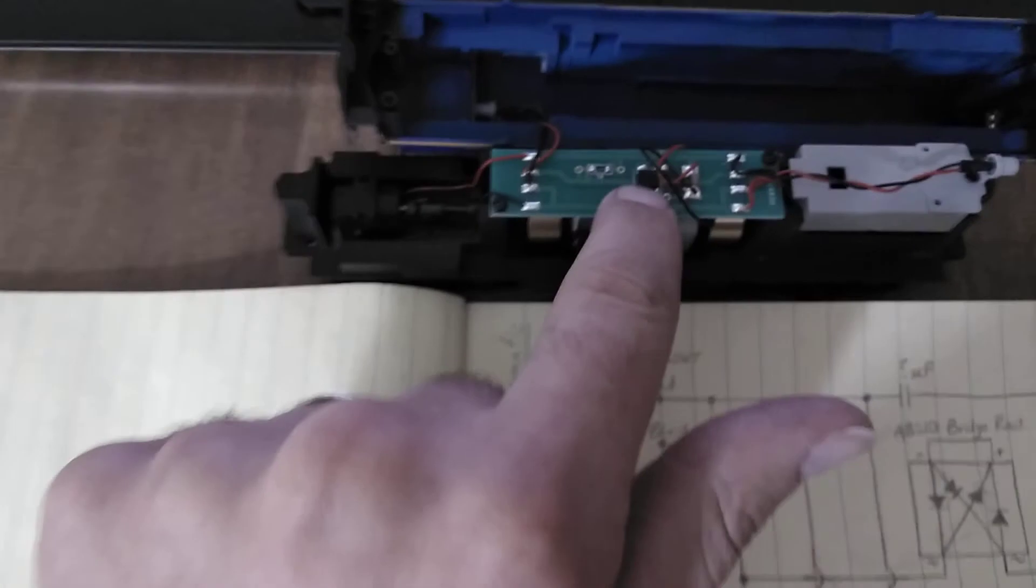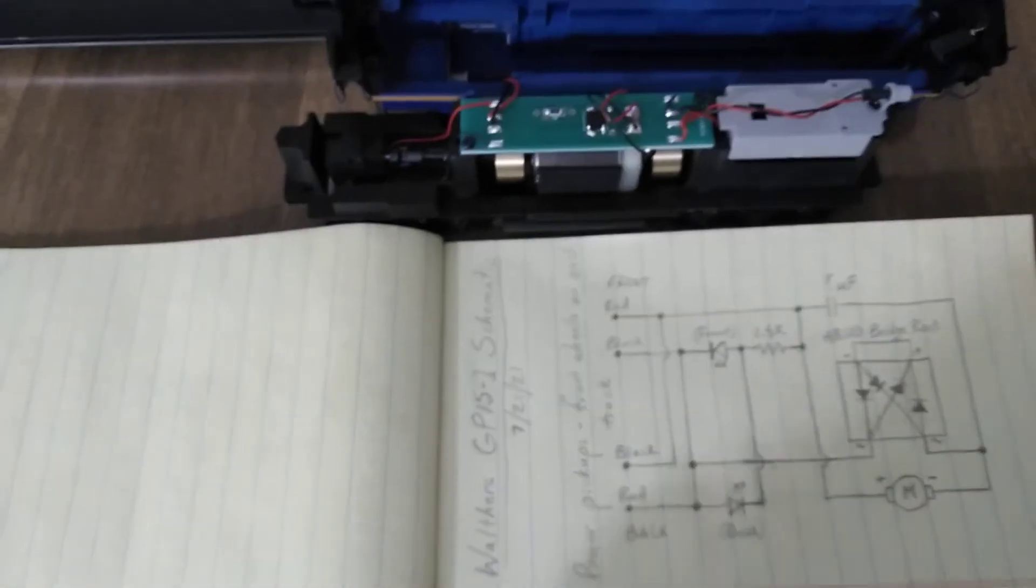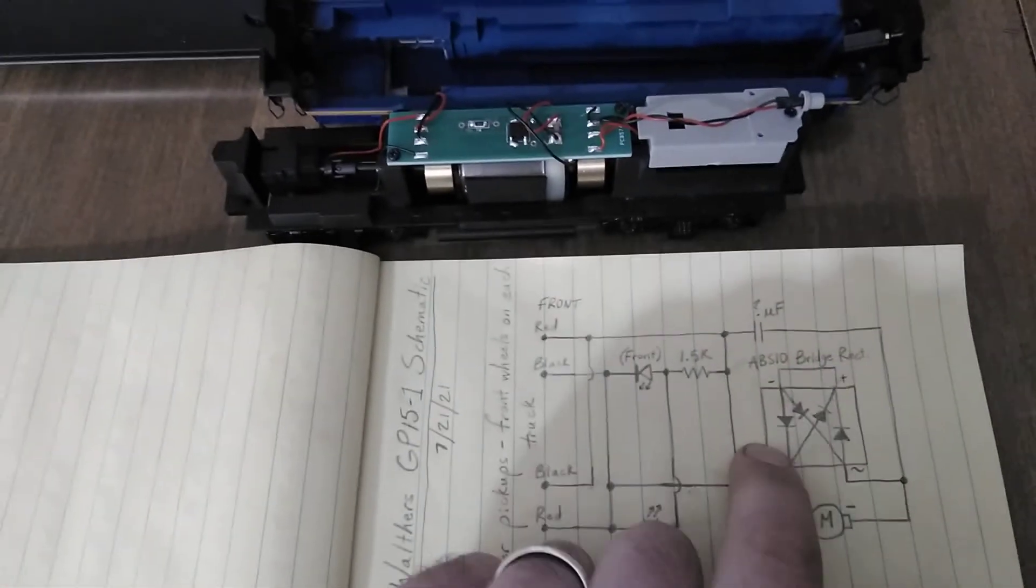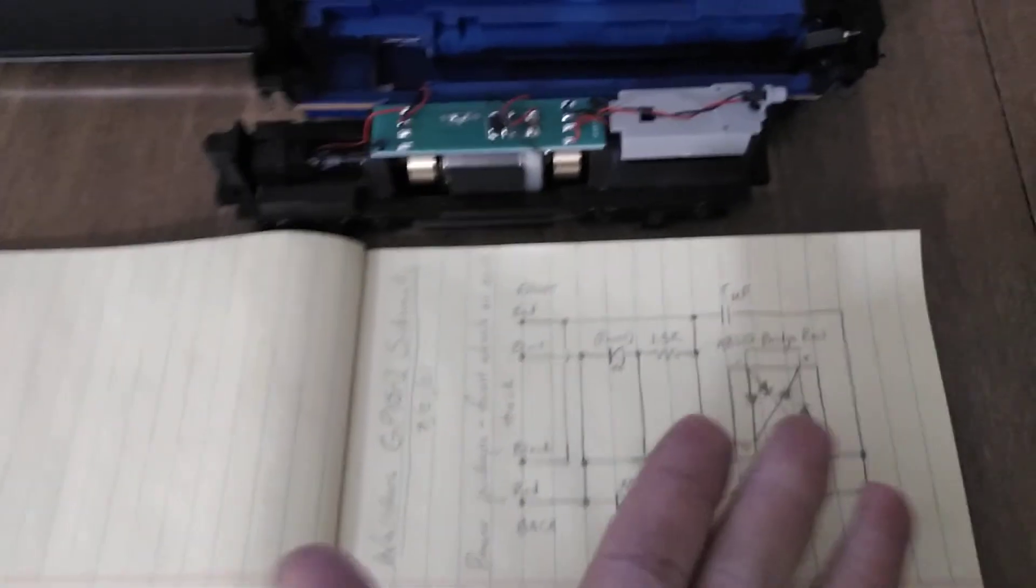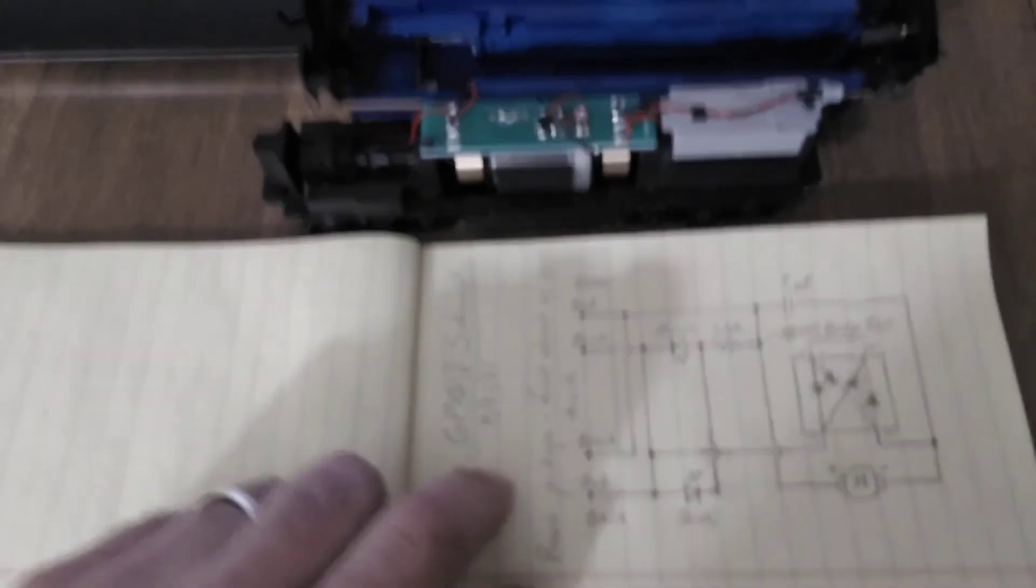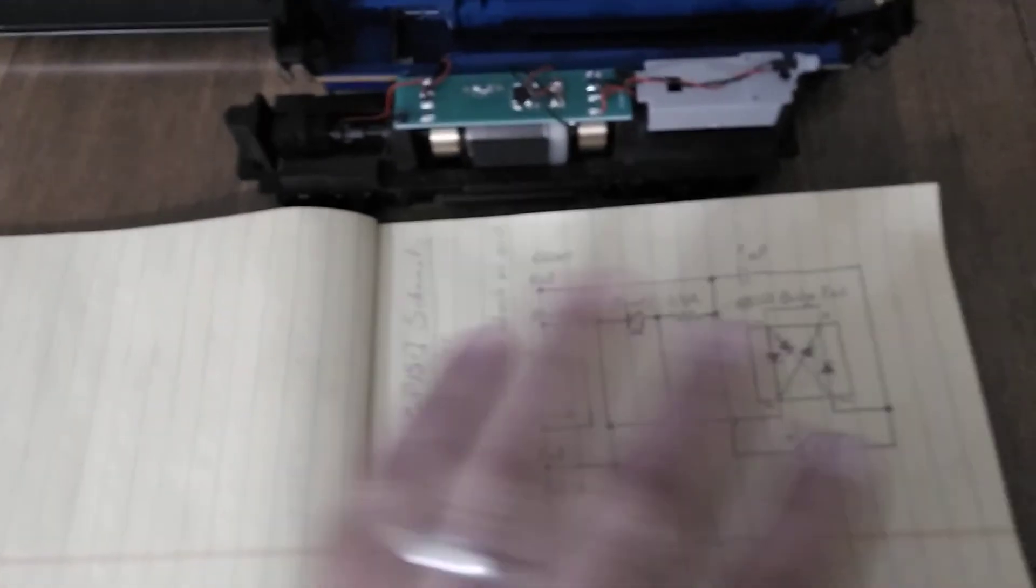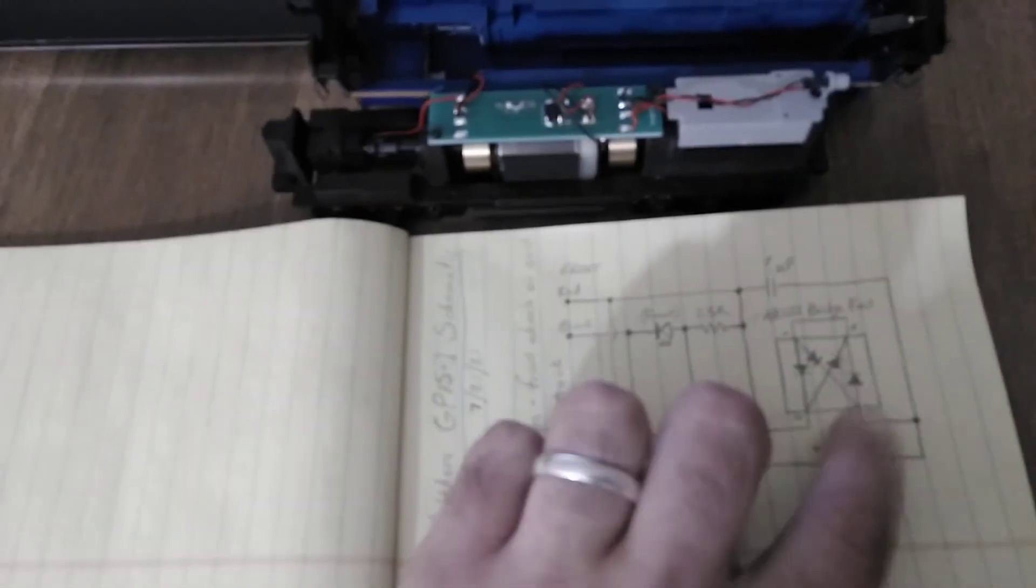We have the motor here, then we have a surprise component here which I wasn't expecting at all. I thought when I saw this—it's actually this black component here—I thought maybe it's a voltage regulator or something, but no, it's actually a bridge rectifier. It's not typically what you would expect in this kind of thing, but apparently it is commonly used. I was looking up schematics online for directional lighting and this was used in a lot of those schematics.